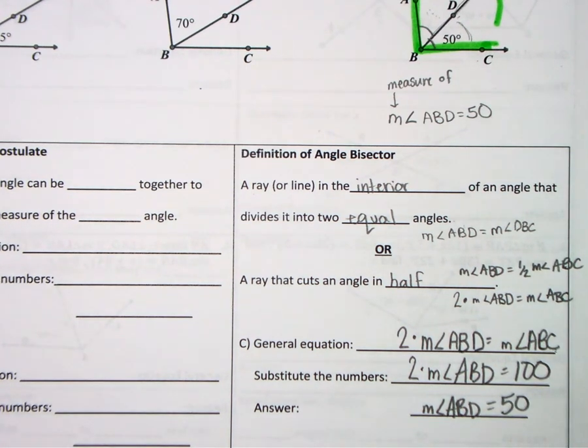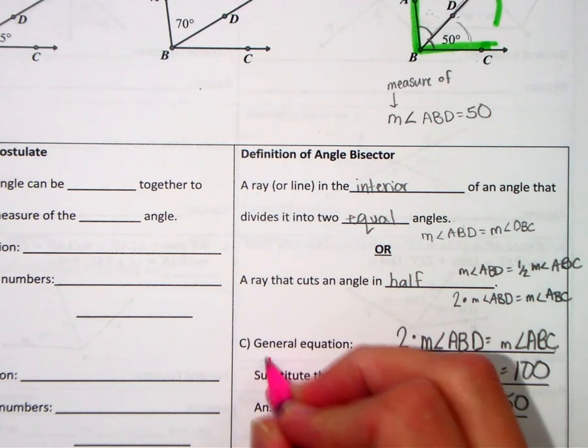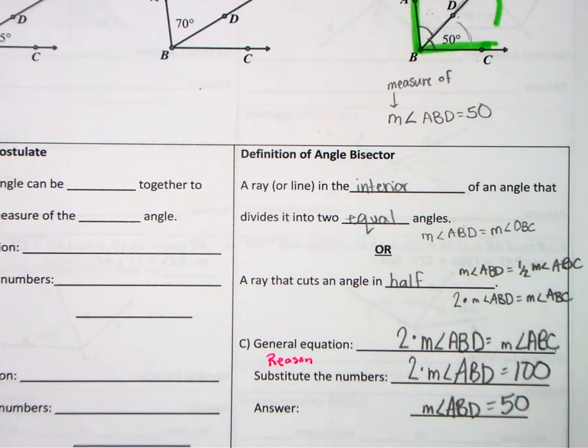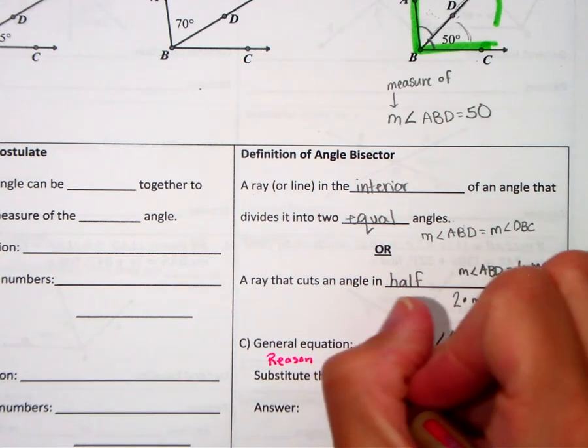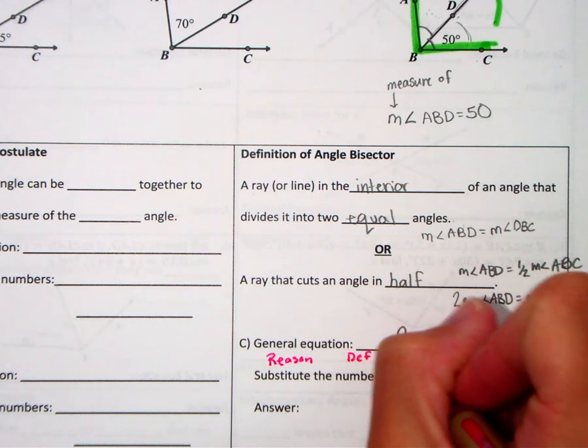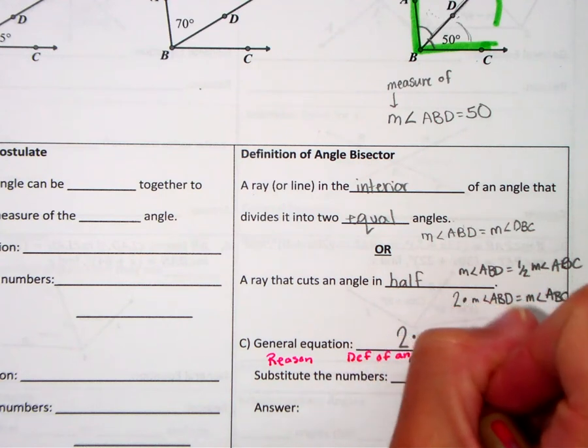And what we're going to add into this is we're going to add in the fact that we now know that if it's a bisector, our reason here that we're going to add to our toolbox of reasons is definition of angle bisector.